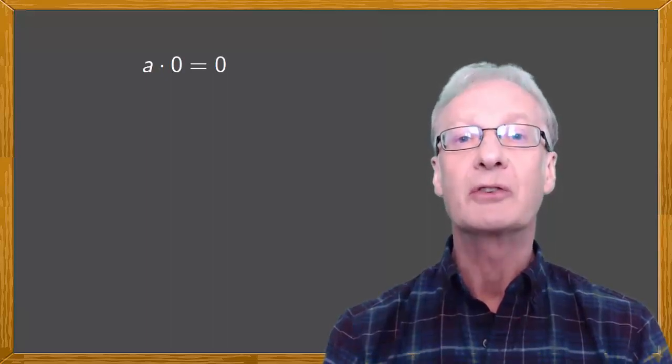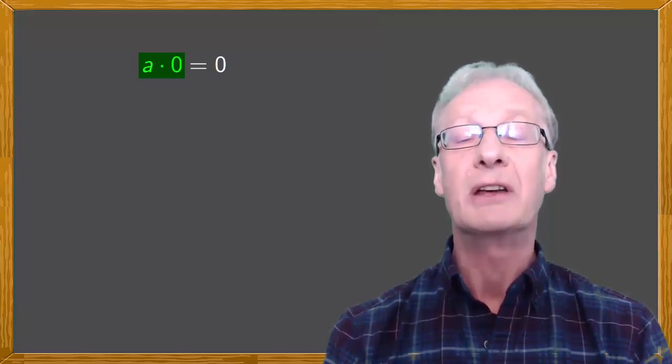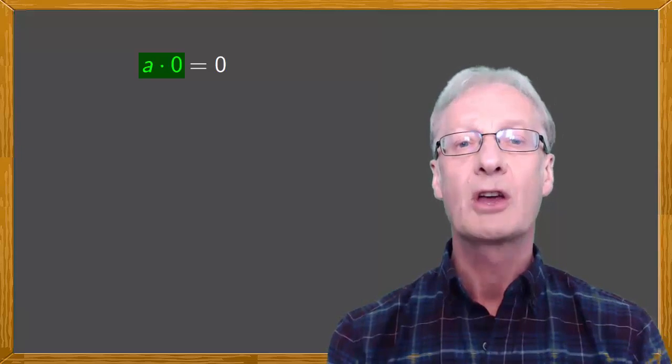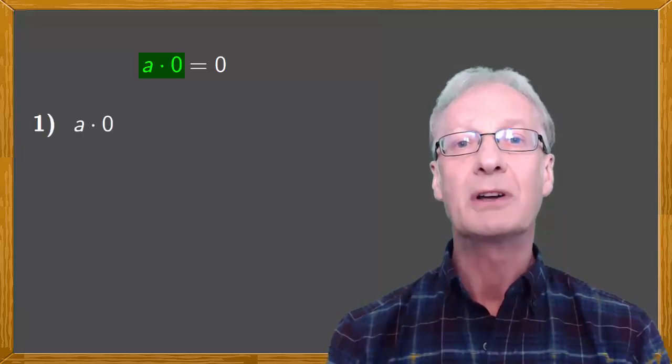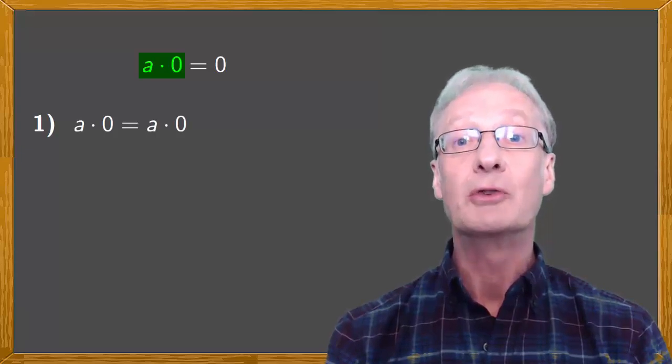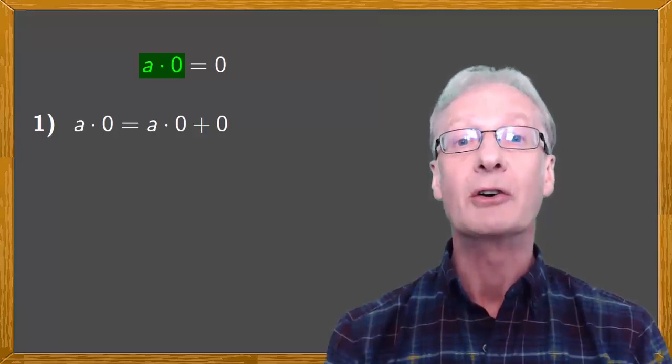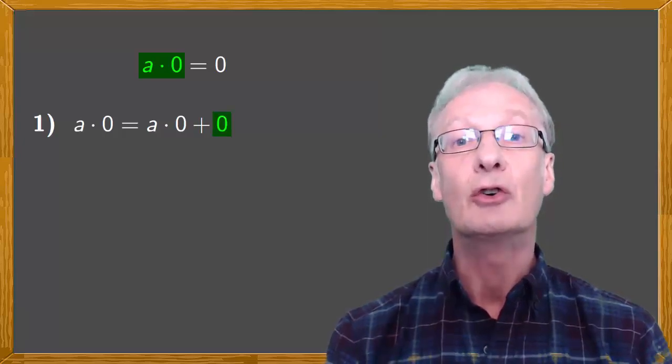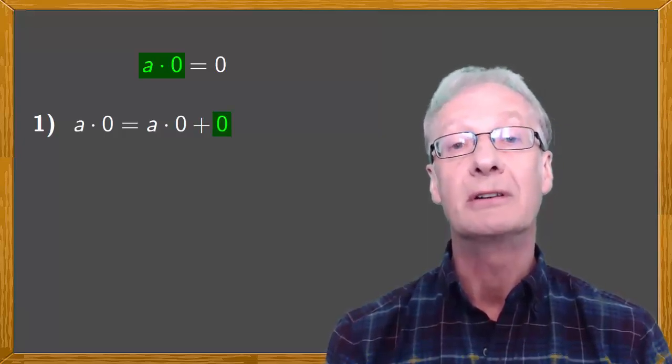To do this, we'll calculate a multiplied by zero in two different ways. First, a multiplied by zero is a multiplied by zero plus zero. This is because zero is the additive identity or the neutral element of the sum.